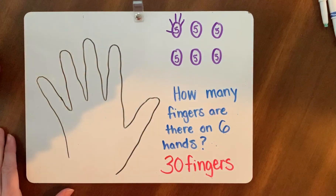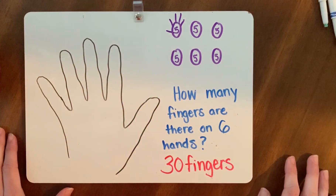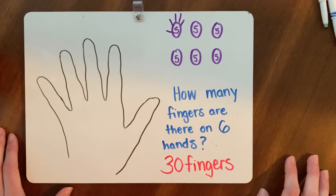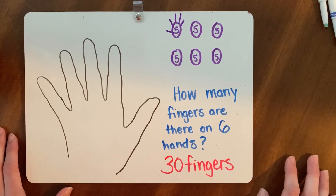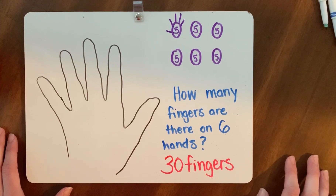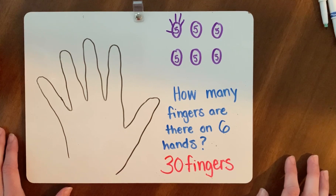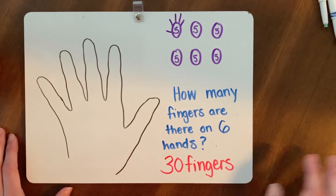Now we're ready to answer some questions at home. Maybe you can go around the dinner table and see how many fingers are at the table. Make a guess and then check your work by counting everybody's fingers — don't forget to count your own. Have a great day!